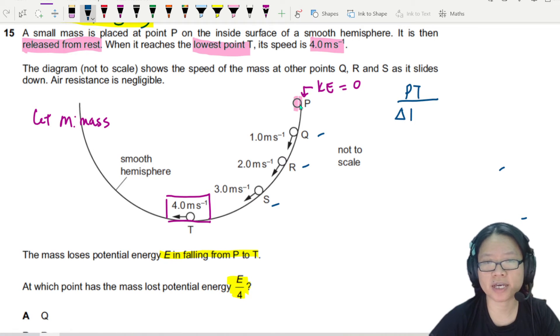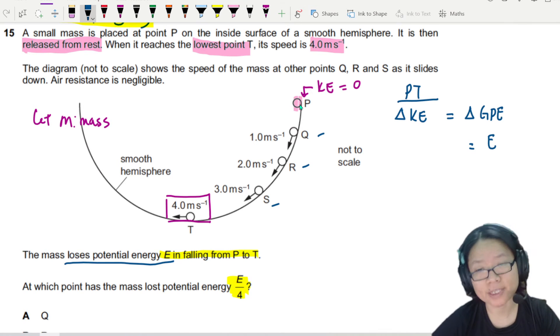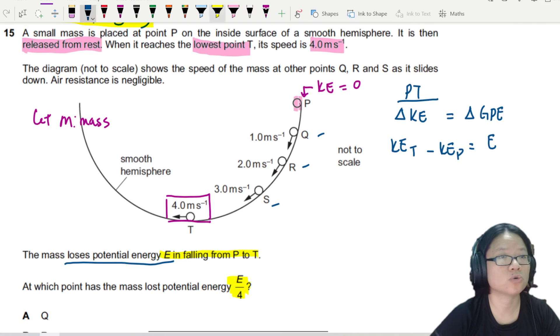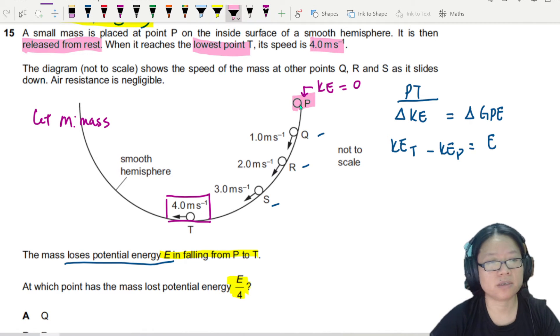The change in kinetic energy will be equal to the change in gravitational potential energy. And your GPE will decrease. So the mass loses potential energy E when falling from P to T. And this can be equal to half mv squared minus 0. Or rather, if you really want to be specific about it, I'm taking the kinetic energy at T, subtracting the kinetic energy at P. So we are looking at P to T.